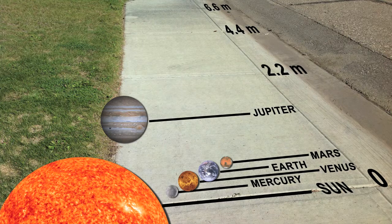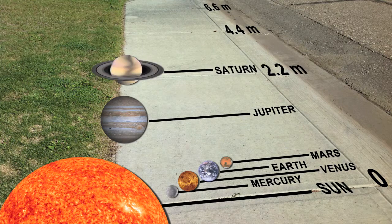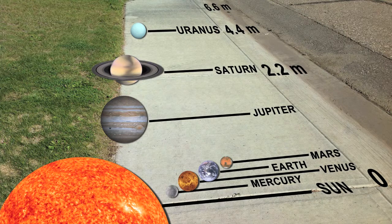Almost twice as far away as Jupiter is Saturn. The ringed planet is placed at 2.1 meters away from the Sun. The second last planet is Uranus. We have to go much further to place its marker at the 4.2 meter mark. And last is Neptune, which in this model is all the way out at the 6.6 meter mark.